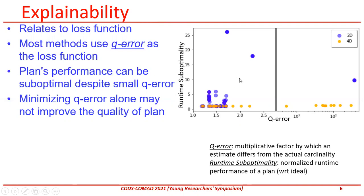There are cases where even with low q-error the plan is highly suboptimal. The reason is that a plan's performance depends on several other factors, such as the cost of the plan and the location of errors in the plan tree. We need to take care of these factors as well when designing the loss function we are minimizing.